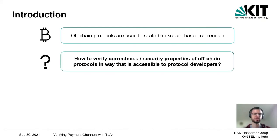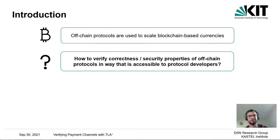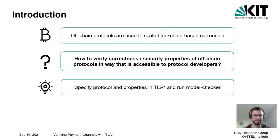The big research question we are looking at is how to verify correctness properties and security properties of such off-chain protocols in a way that is accessible to protocol developers. We do not want to use complicated proofs or require protocol developers to write them. Instead, we use a tool to quickly check if a variant or modification of a protocol still fulfills certain security properties, by specifying the protocol and its properties in TLA+ and then using a model checker to verify the properties.